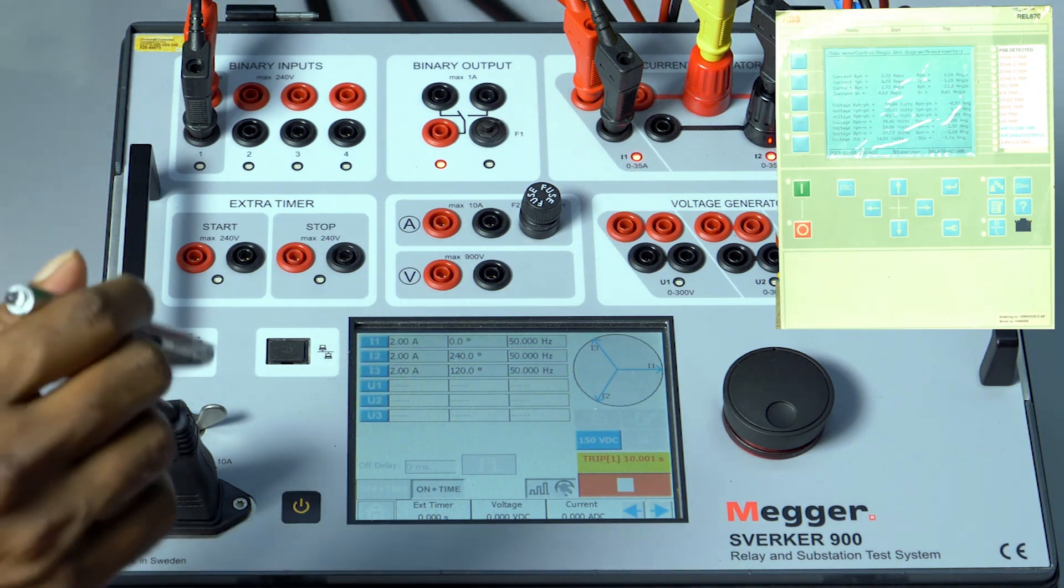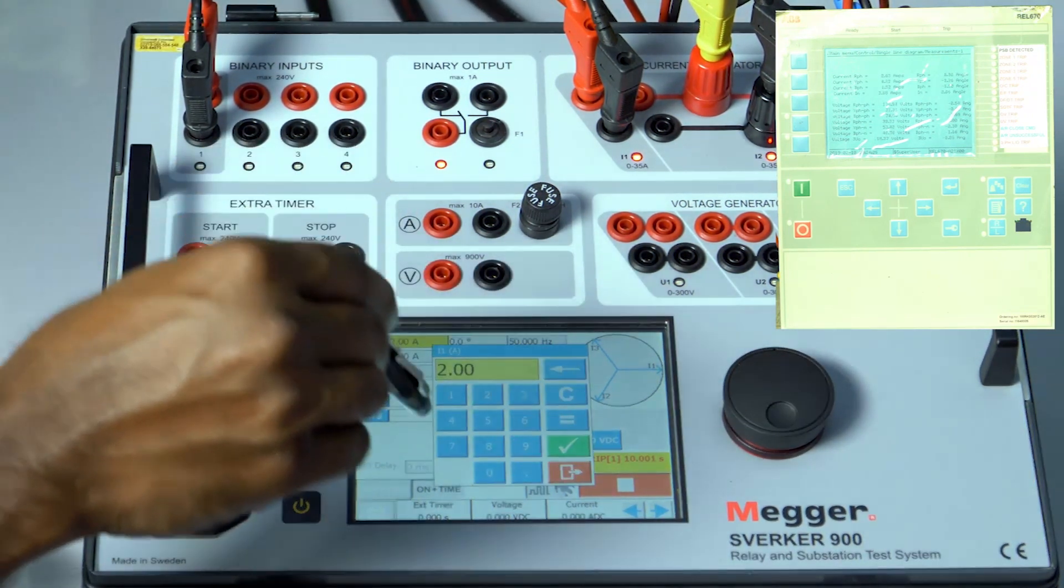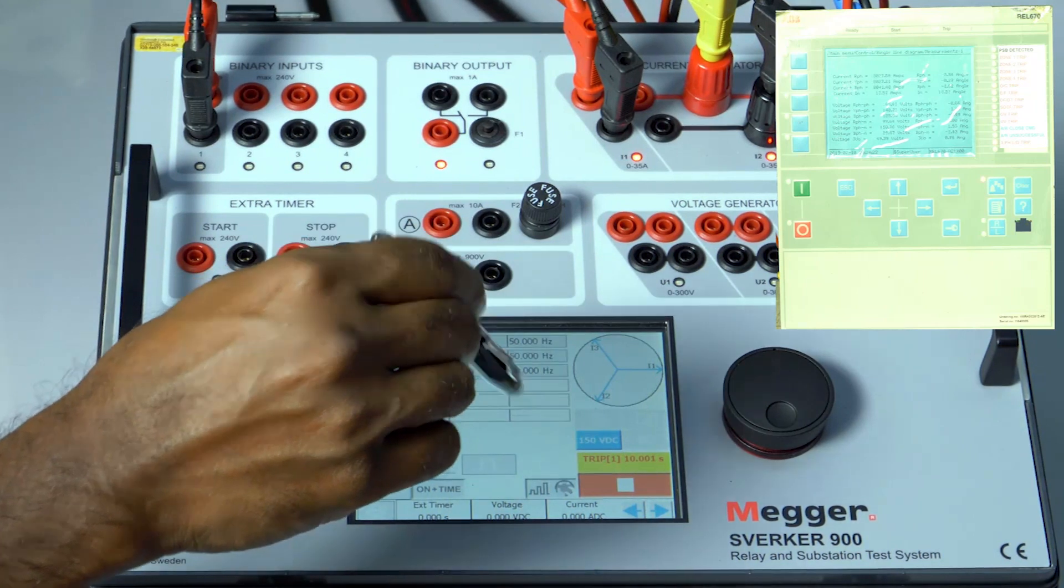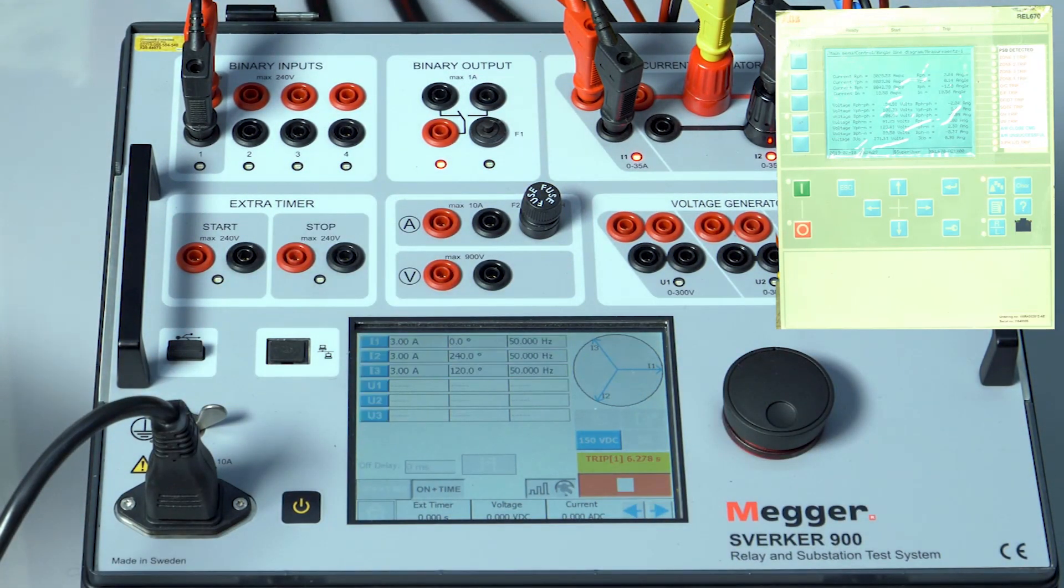Let me repeat the test with 3 amps without switching off. Press 3, press the button. So six point two seven eight seconds.